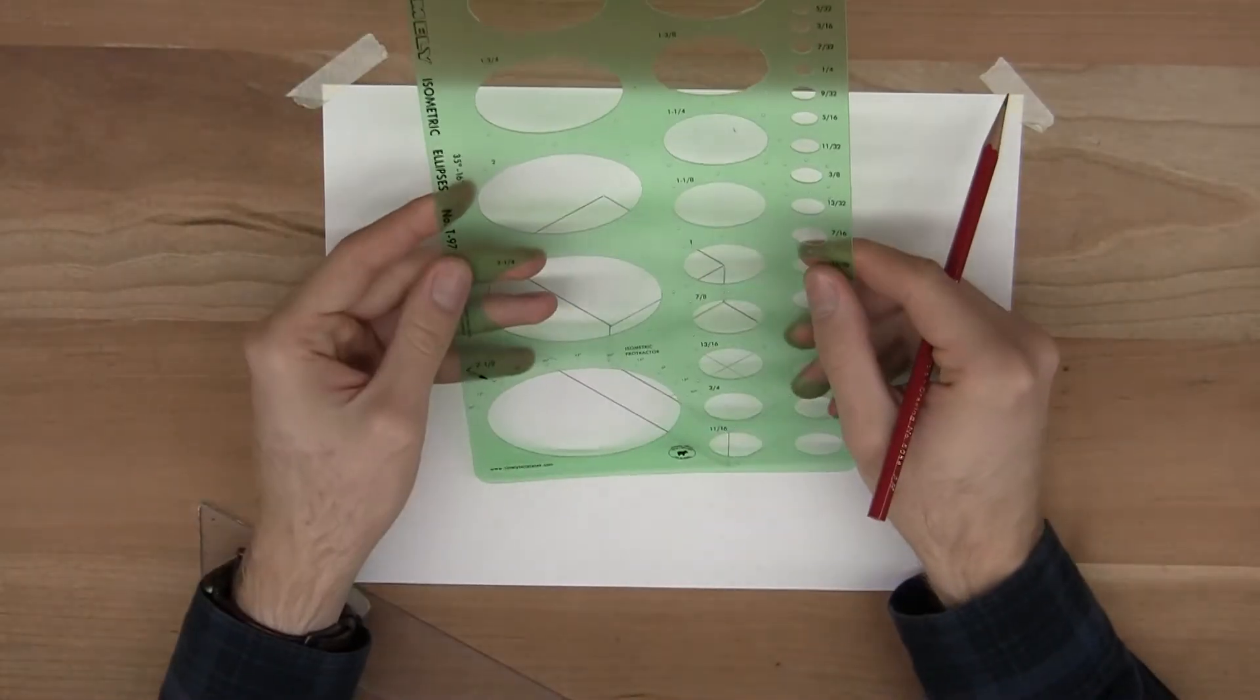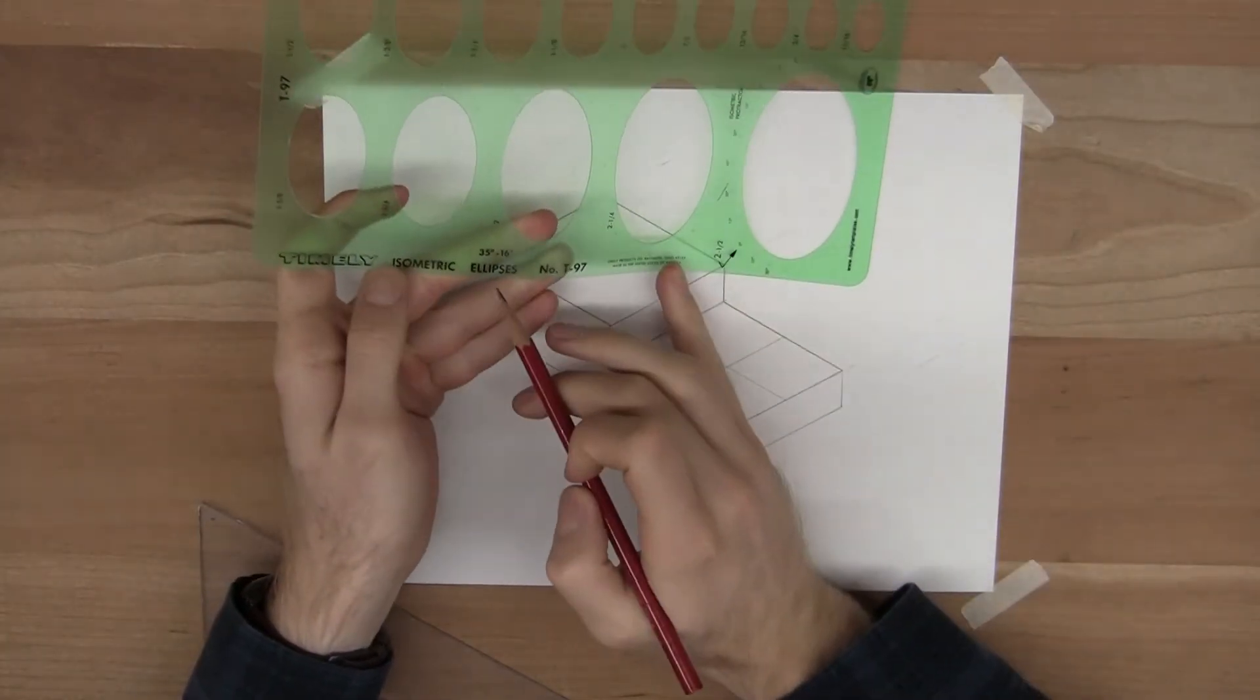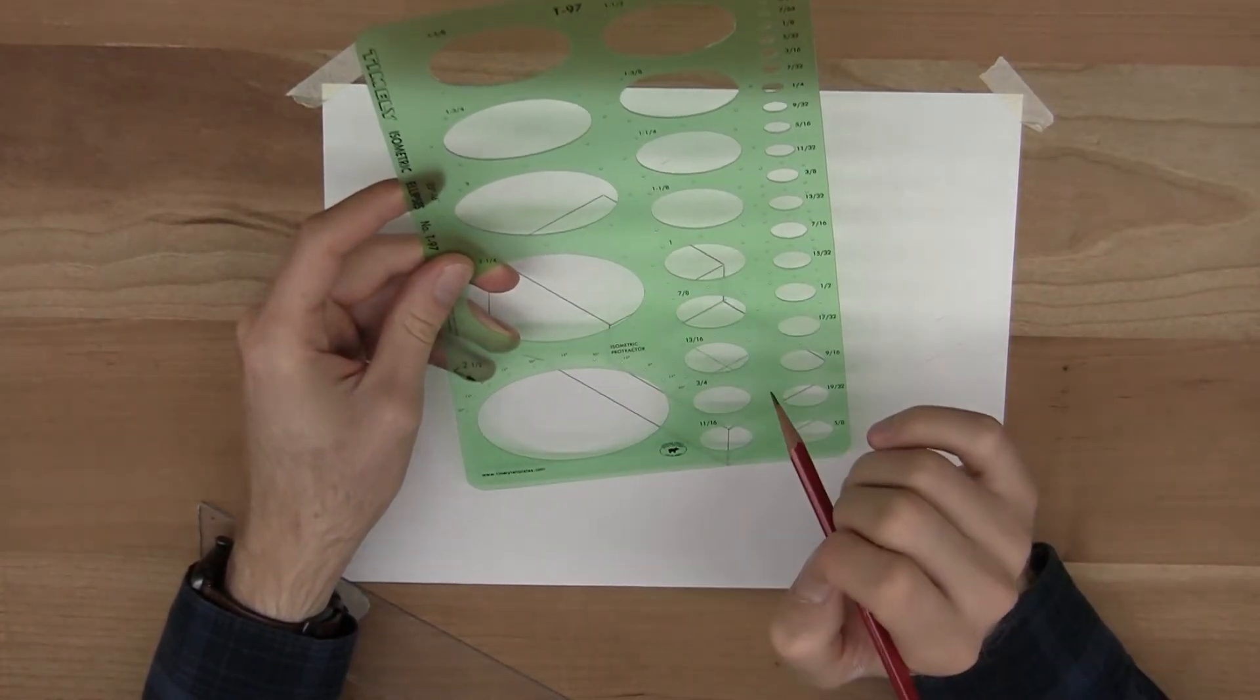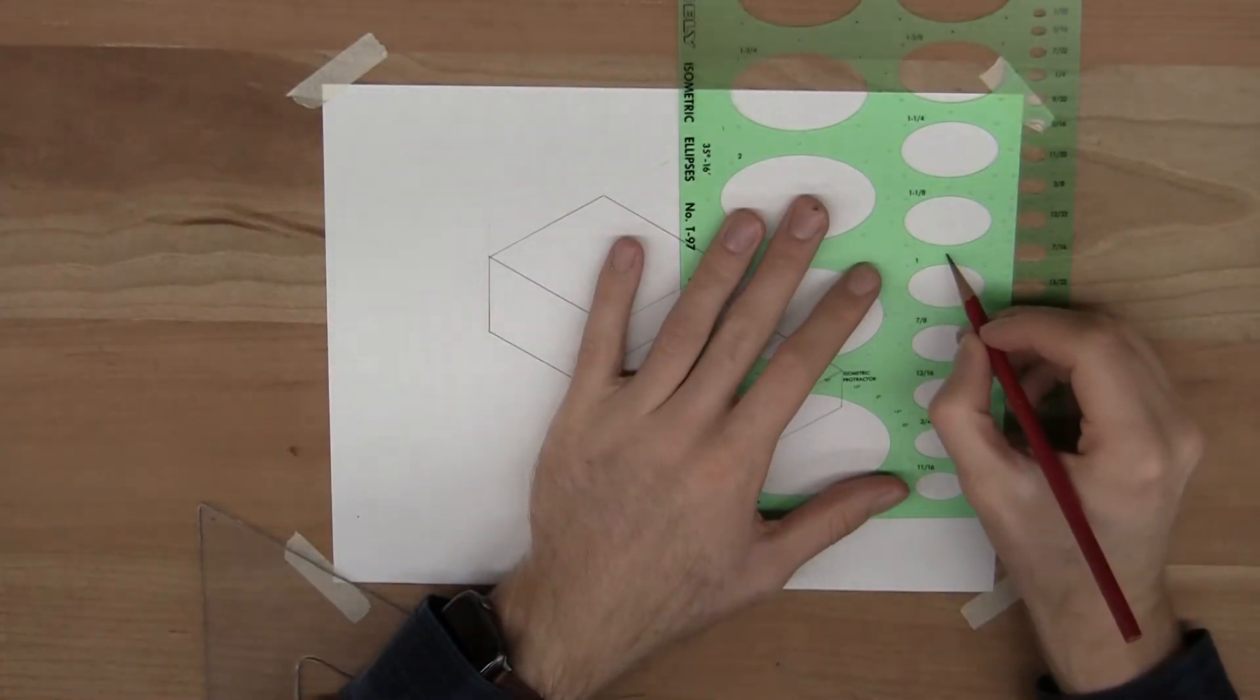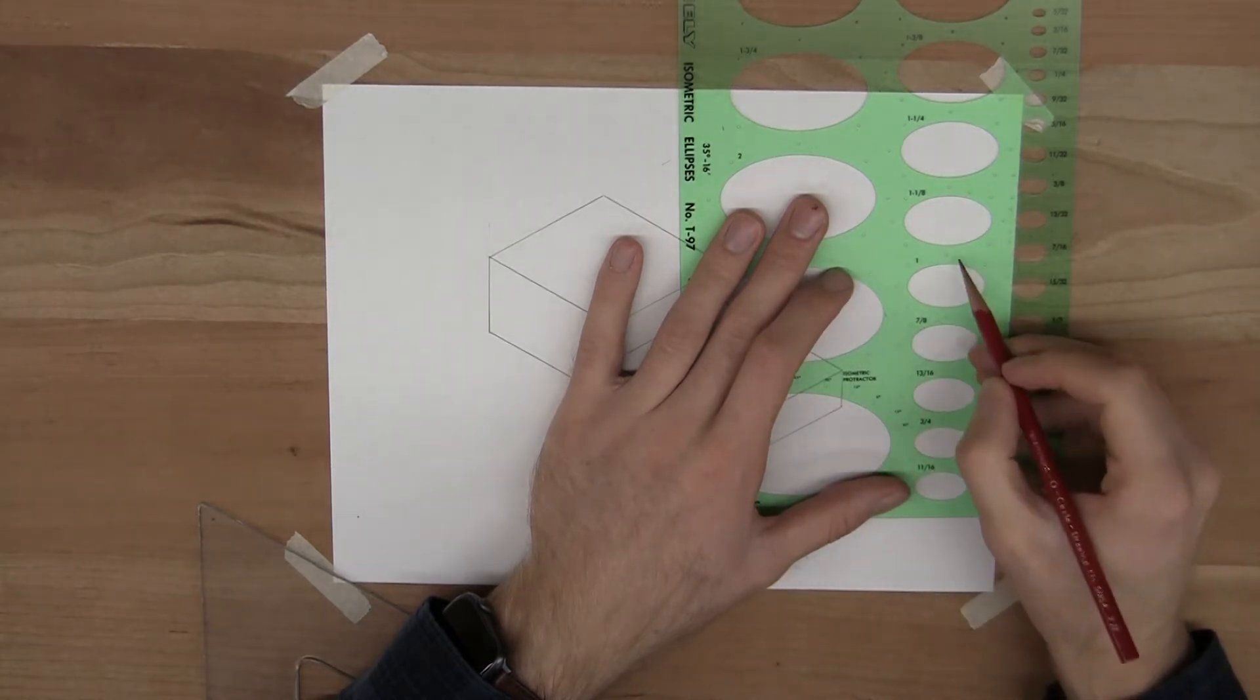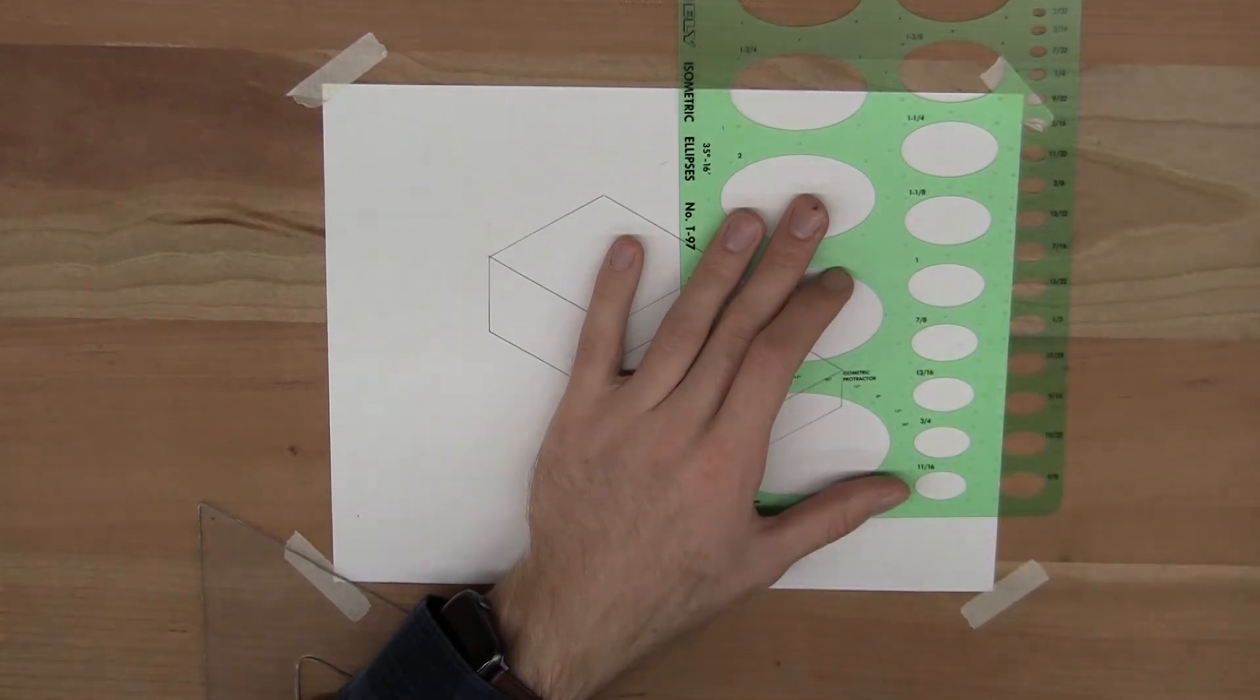This is our isometric circle template. You can see isometric ellipses. Just like the circle template, I'm going to find the size that I need: one inch. And on it you'll see that there are eight holes around that circle.